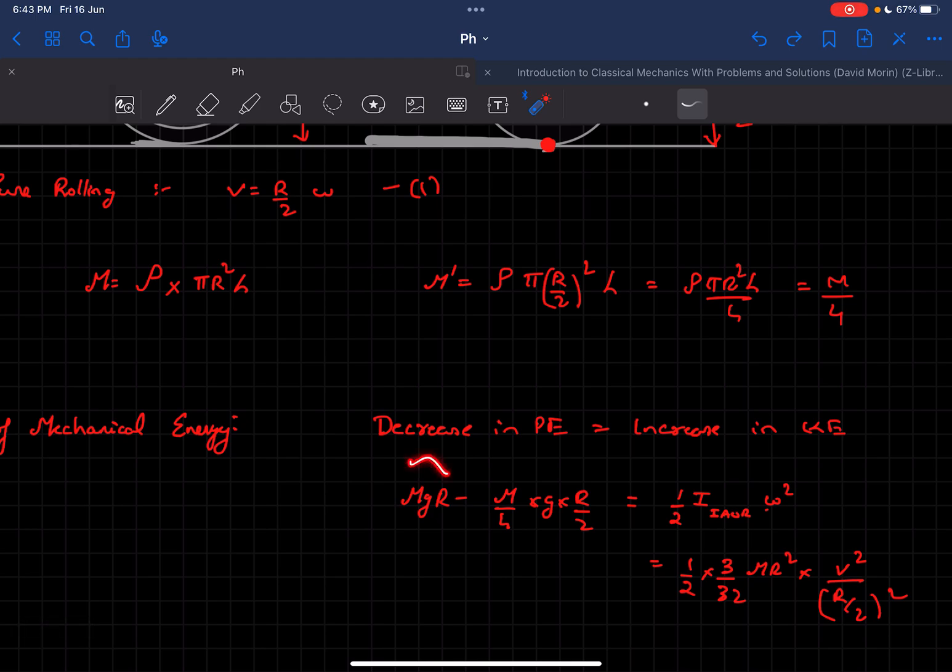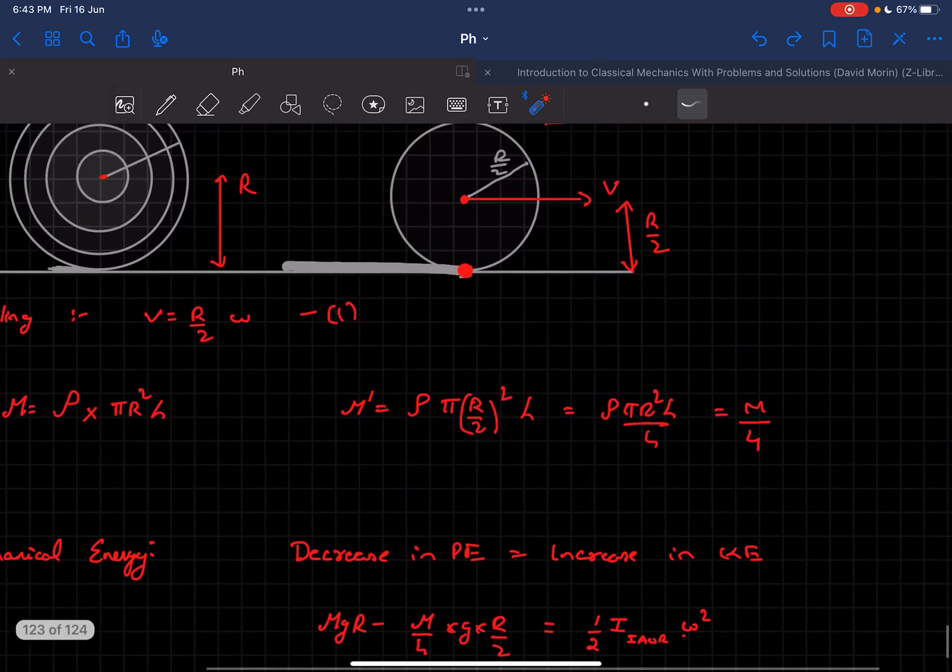The decrease in potential energy would be mgR (initial potential energy) minus the final one, which would be m/4 times g times r/2. This is the decrease in potential energy, and that would be equal to the increase in kinetic energy.